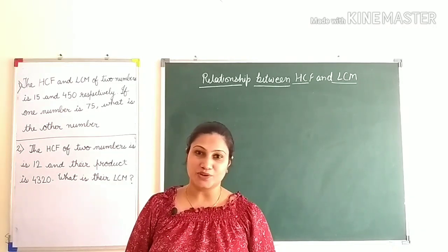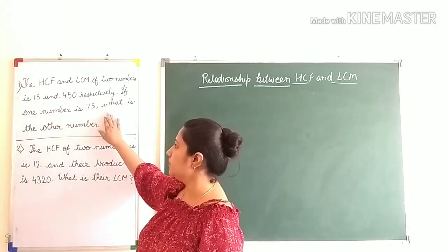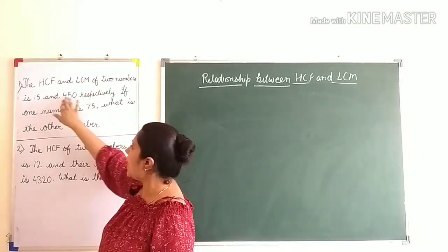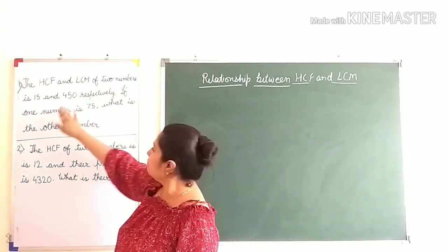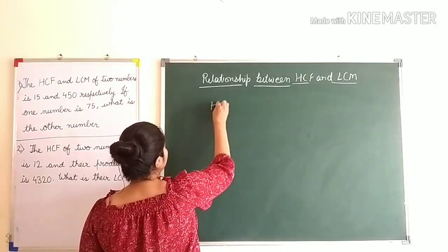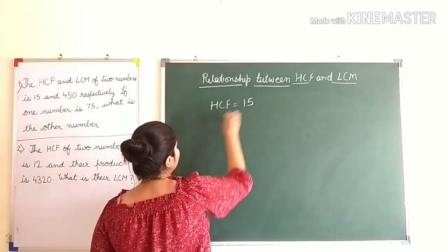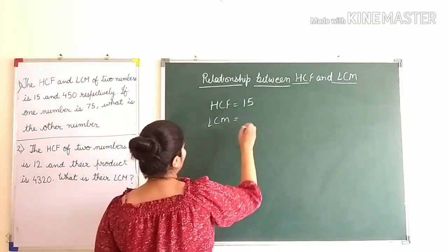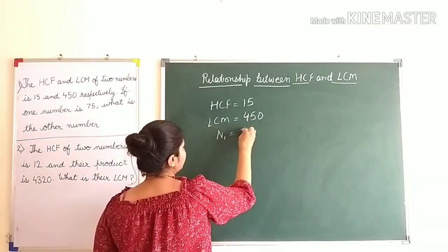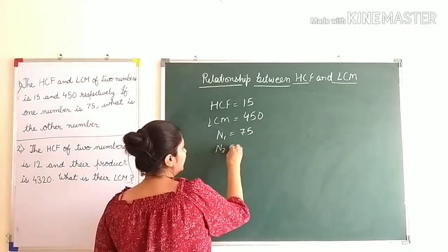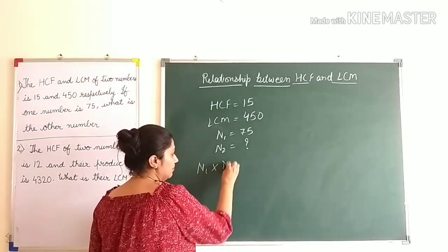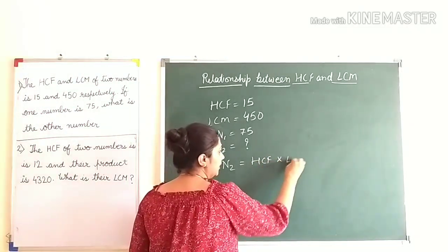Let's do some word problems on this topic. Here are two problems — let's do them one by one. First question: the HCF and LCM of two numbers are 15 and 450 respectively. If one number is 75, what is the other number? The given information is: HCF = 15, LCM = 450, and one number is 75. We have to find the other number. The formula is N1 × N2 = HCF × LCM.